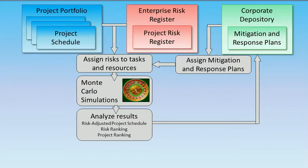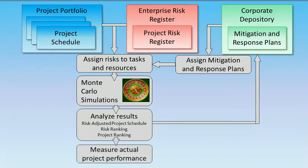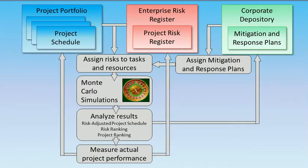This process iterates over the course of the project. During project execution you can monitor your project, which includes the monitoring and control of risks. As your project proceeds, you can update your risk register, mitigation and response plans, and run periodic Monte Carlo analysis to ensure that your project stays on time and on budget.